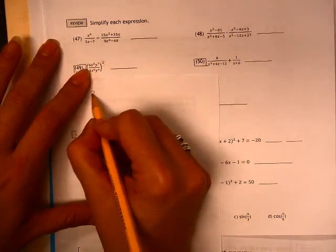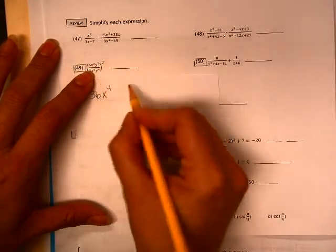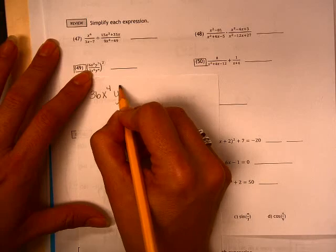So I have 6 times 6. I have x squared times x squared. And I have y to the 7th times y to the 7th.